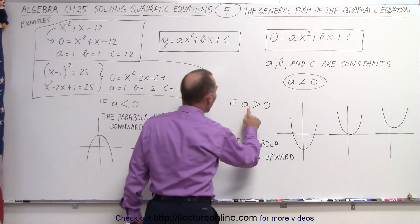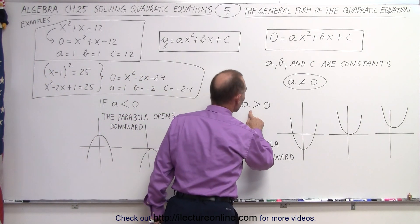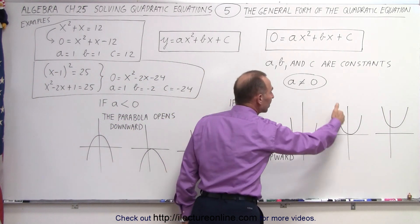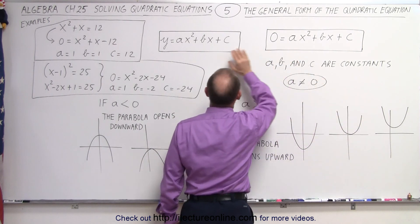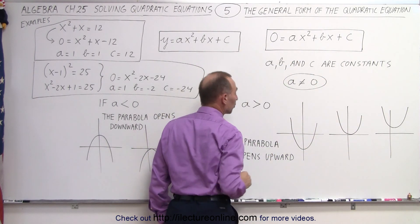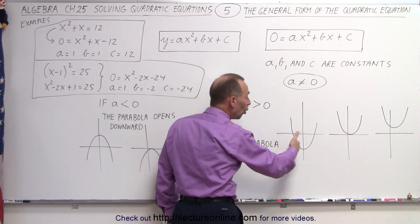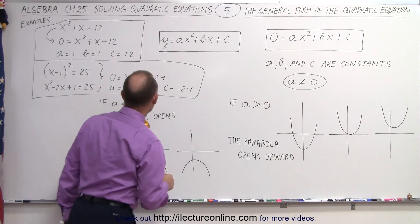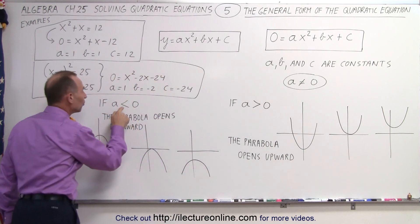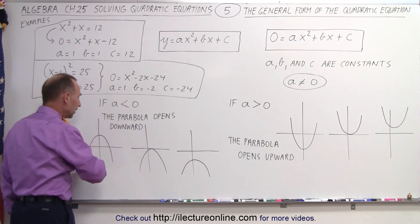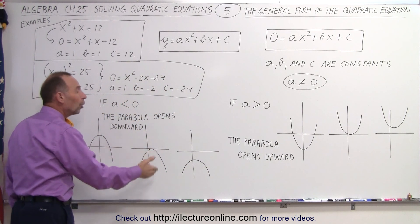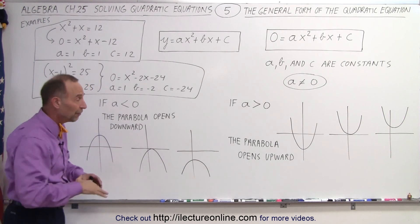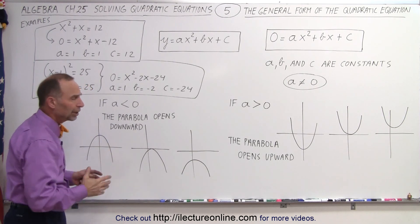If a is positive, then the parabola that represents the function belonging to that quadratic equation opens upward. If a, however, is smaller than zero — if a is negative — then the parabola opens downward. And that's how you can tell the difference in what it will look like.